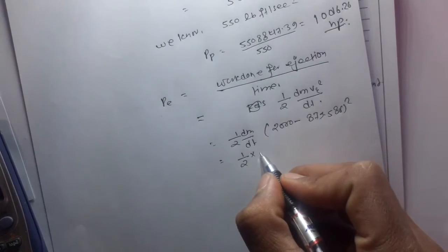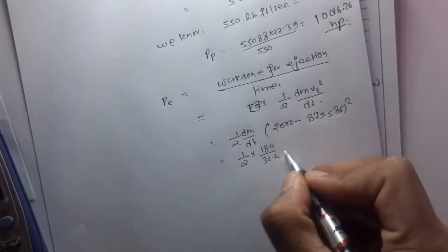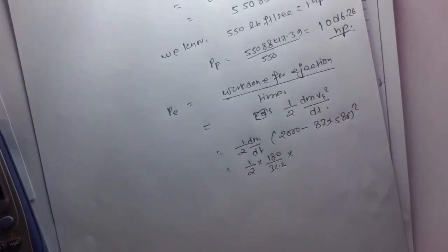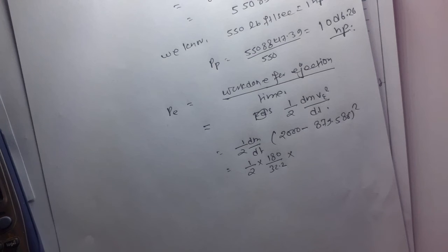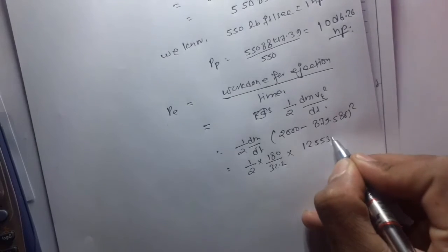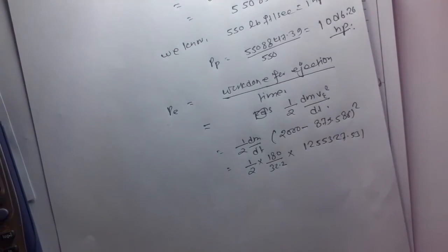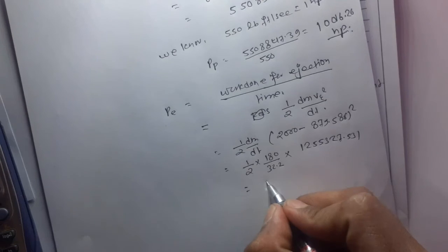So this is 1/2 times dm/dt, which is 180 upon 32.2, times (2000 minus 879.586) squared. This equals 3,508,679.436 lb-ft per second.